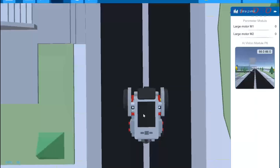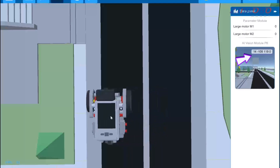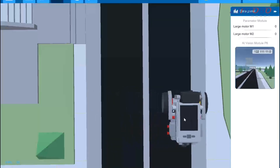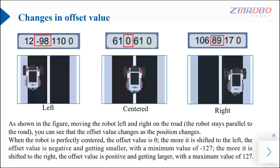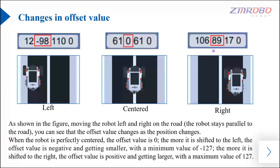If we move the robot left or right, we'll see that the offset value changes as the robot's position changes. Through this test, we can find that when the robot is completely centered on the road, the returned offset value is zero. When the robot is more to the left, the returned offset value is negative and becomes smaller and smaller, with a minimum value of minus 127. When the robot is more to the right, the offset value is a positive number and becomes larger and larger, with a maximum value of 127.